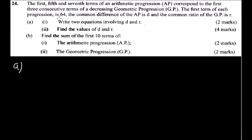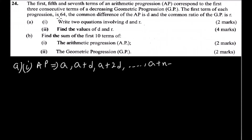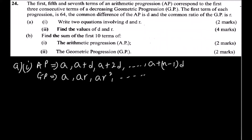For part one, let's remind ourselves how we write an AP: the terms are a, a+d, a+2d, and so on. The nth term is a plus (n minus 1)d. For a GP, the terms are a, ar, ar², and so on, with the nth term being ar^(n-1).